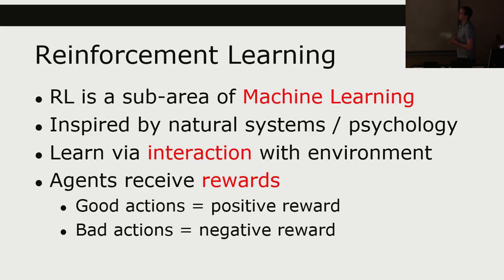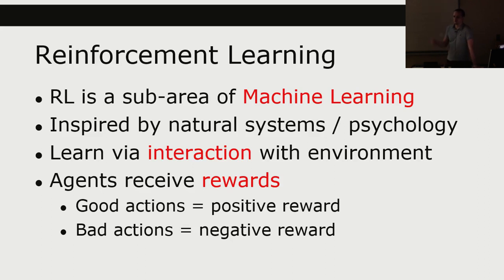The way reinforcement learning works is that you have an agent in an environment. The agent takes some actions, and based on those actions it receives rewards. A good action earns a positive reward; a bad action earns a negative reward. For example, everyone has been burned at some point — you touch fire, that didn't feel good, so you don't do it again. You start with no belief that fire is bad, touch it, and then you know fire is bad.